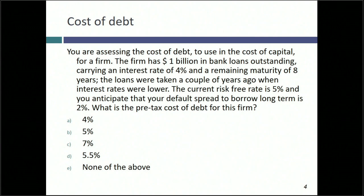The loans were taken a couple of years ago when rates were lower, either because interest rates were lower or because the company had less default risk. Today, the risk-free rate is 5%, and the company would have to pay 2% over that to borrow. One choice is to say: I'm already paying 4%, that's my cost of debt — that's called a book interest rate, and many analysts actually use it. The logic being: I borrowed the money, that's my cost.